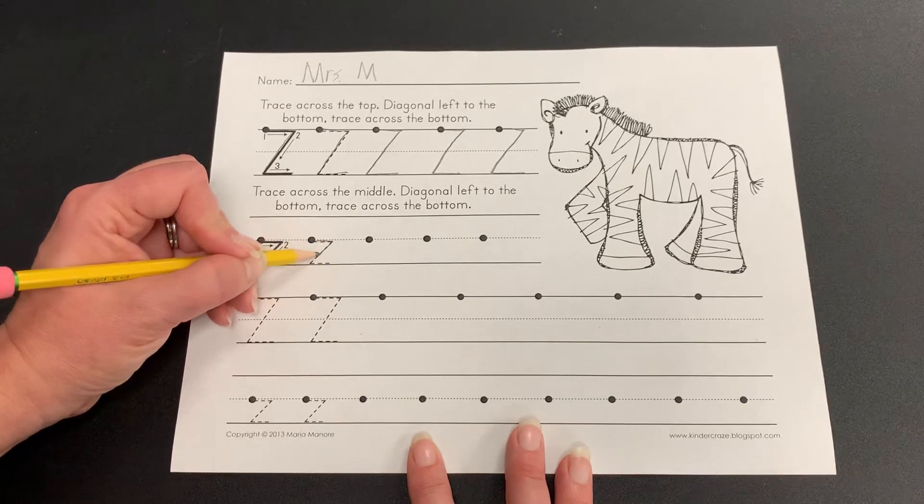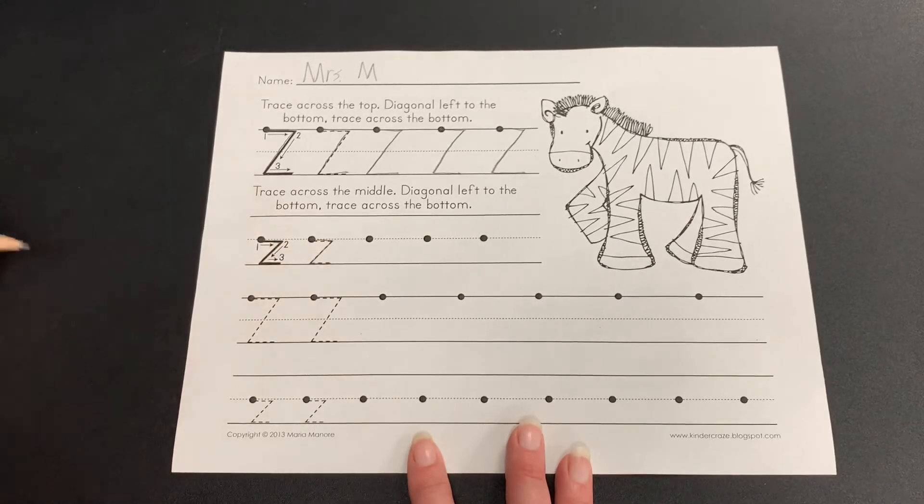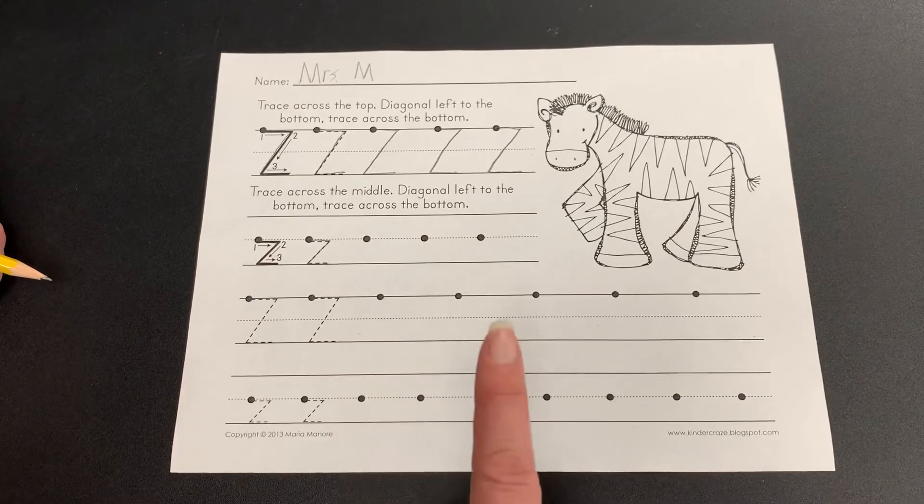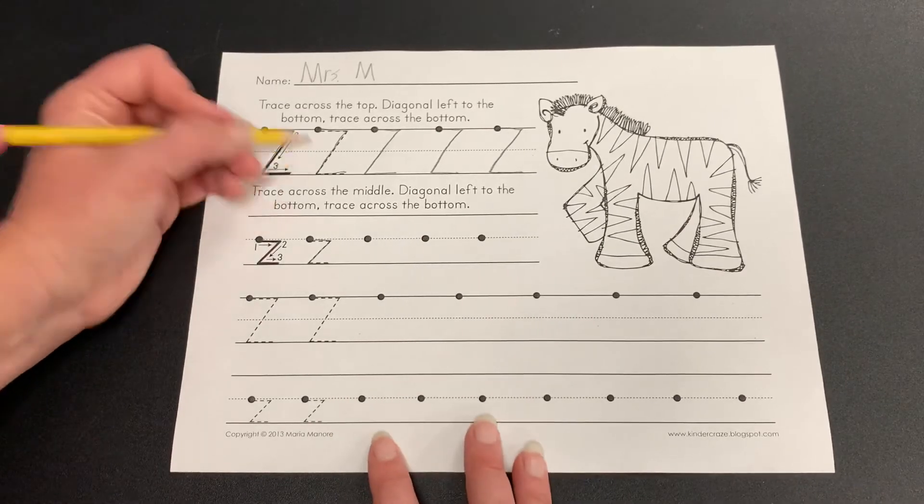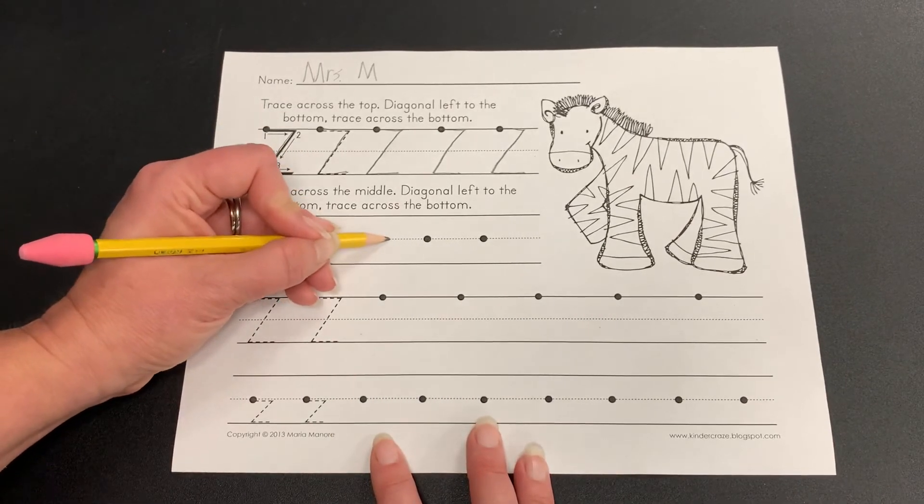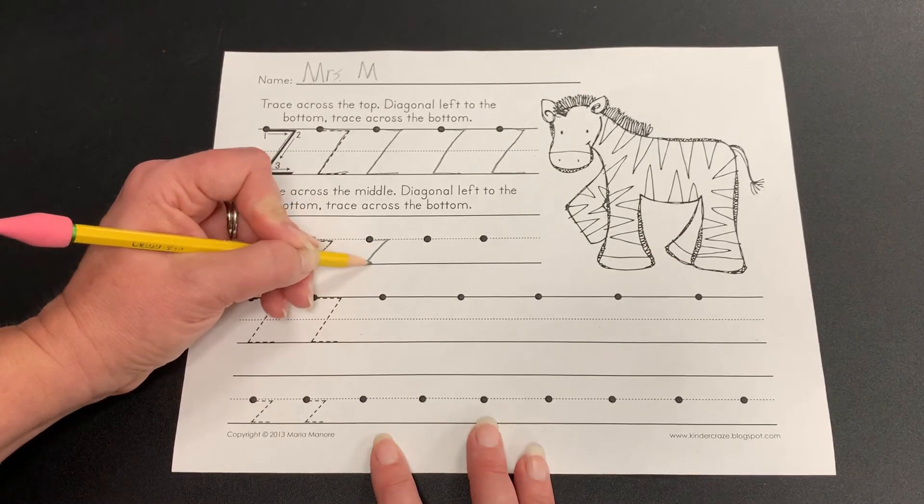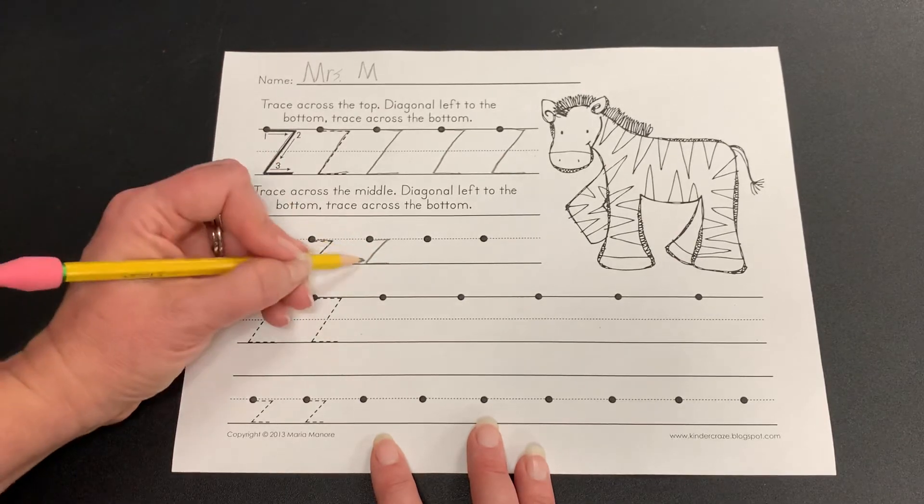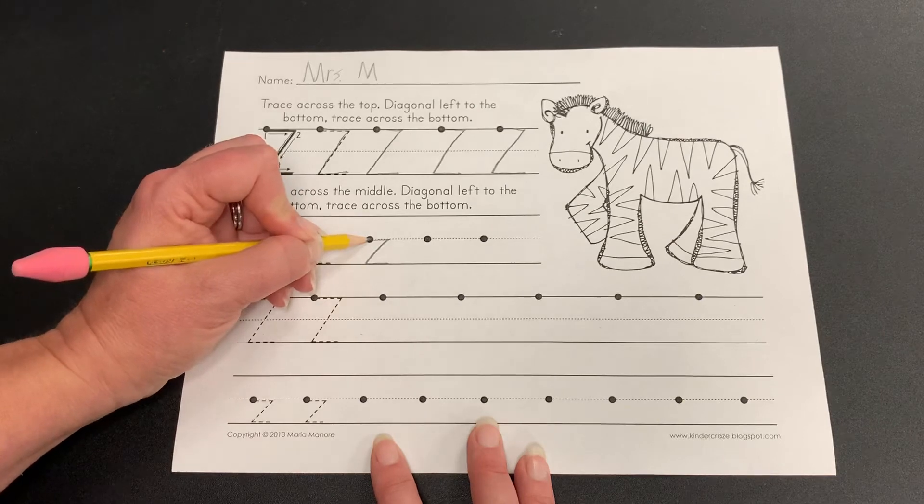Straight, slanted, straight. Get out your finger pencil and make one with me, but make sure it's smaller than capital letter Z. Straight, slanted, straight. Make sure it's touching the bottom line and touching this dotted line.